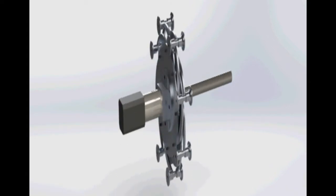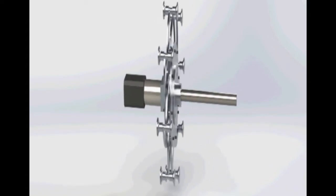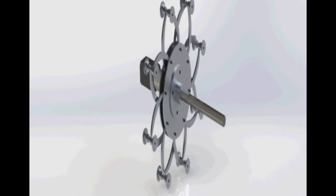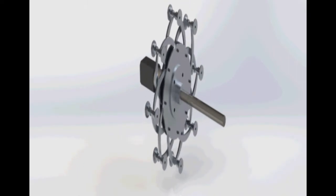When one disc rotates with respect to the other, then the effective diameter of the RVT mechanism will change.